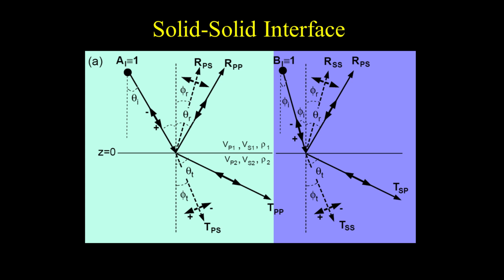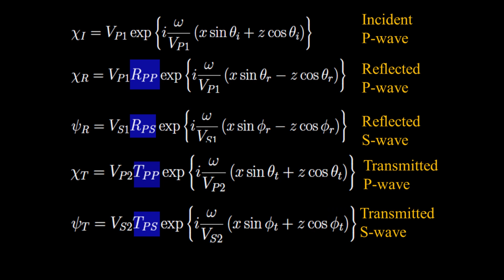We use the same definition for angles as in the previous lecture. The incident angle is theta I; theta R and theta T denote angles of reflected and transmitted P wave rays. The angles of converted reflected and transmitted S wave rays are denoted by phi R and phi T respectively. The minus signs in the phase of the reflected potentials indicate that wave propagation is in the direction of the negative Z axis. We have omitted the factor exp(-i*omega*t) because it will cancel out when we substitute the potentials into the boundary conditions.